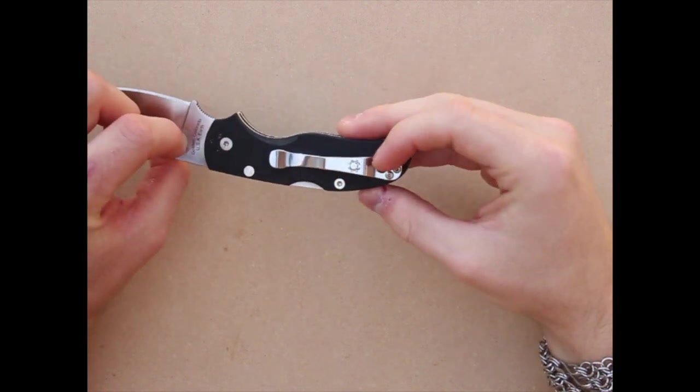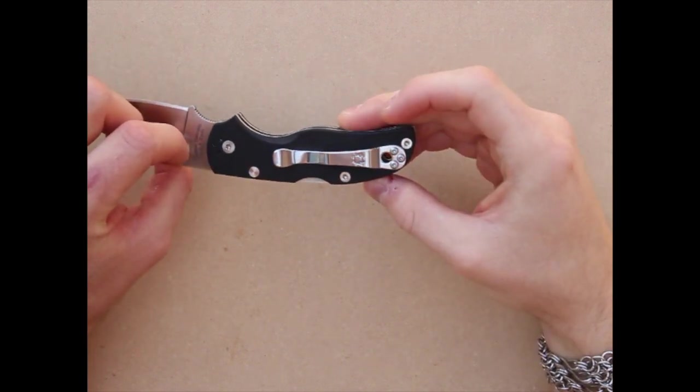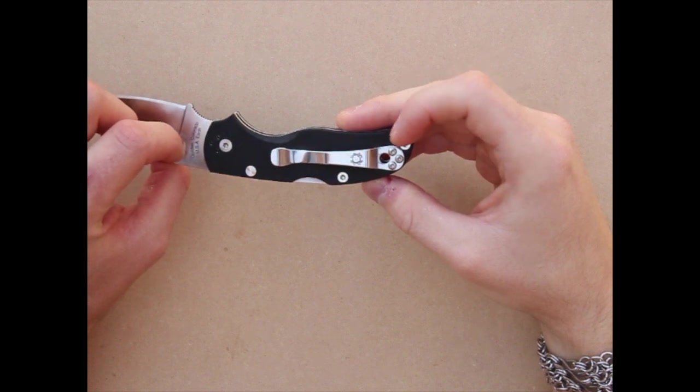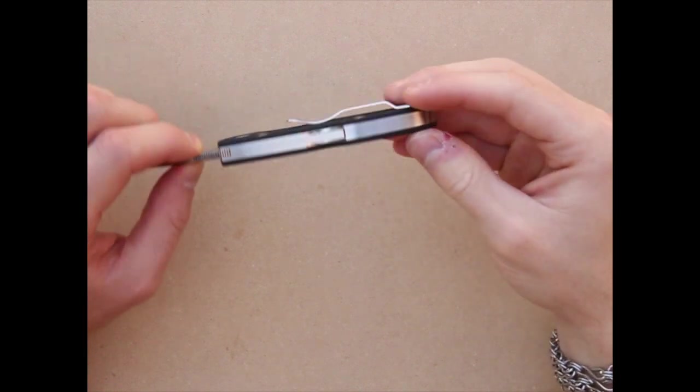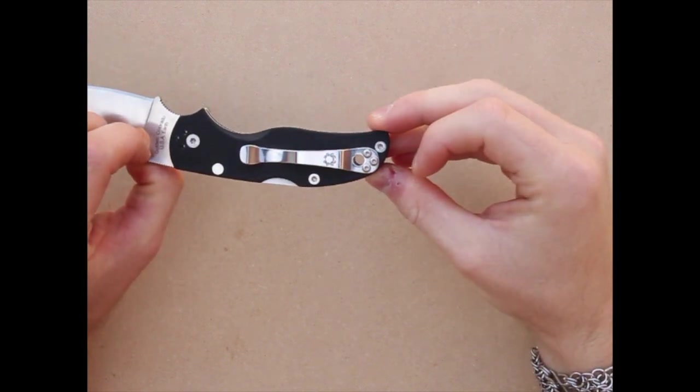The pocket clip is the polished hourglass, which can be reversed tip up, tip down, left or right hand carry. Comes with a lanyard hole and the lanyard does slip right through the pocket clip.